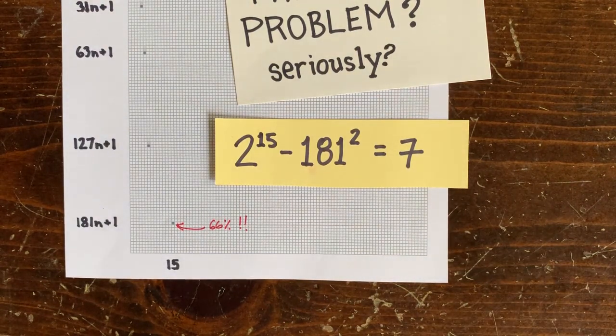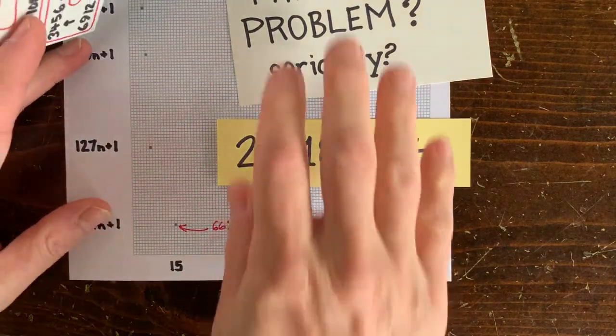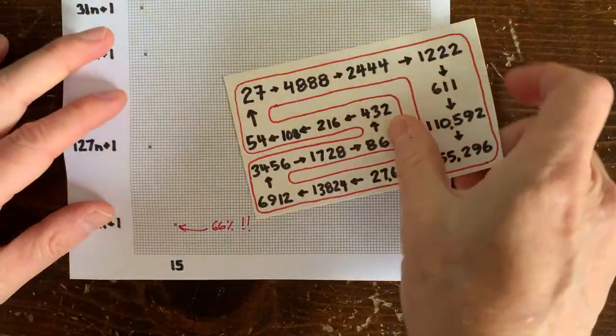Okay, so 66% chance is good, but is there an actual loop? Yes, there is. And here it is.